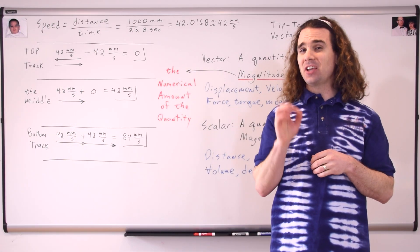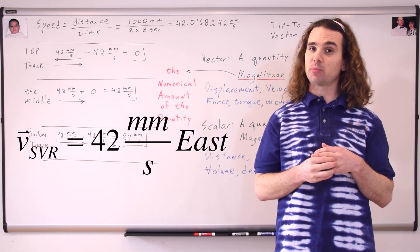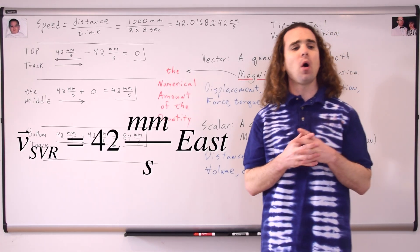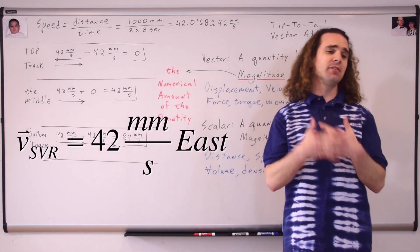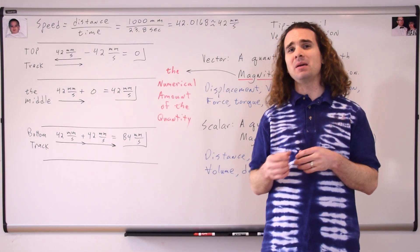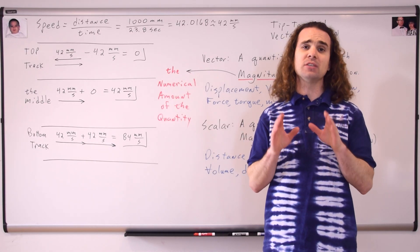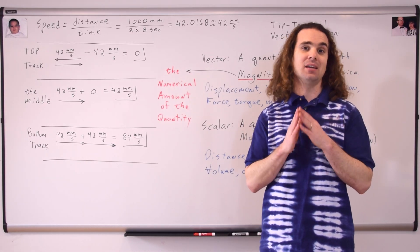And the velocity of slow velocity racer itself was 42 millimeters per second east. Therefore, Billy, what was the magnitude of the velocity of our race car? The magnitude of the velocity is just the numerical amount of the velocity without the direction. So just 42 millimeters per second. Yes. Now, be aware that scalars can be negative. Initially, some people think that scalars can't be negative. However, please realize that scalars can be negative.